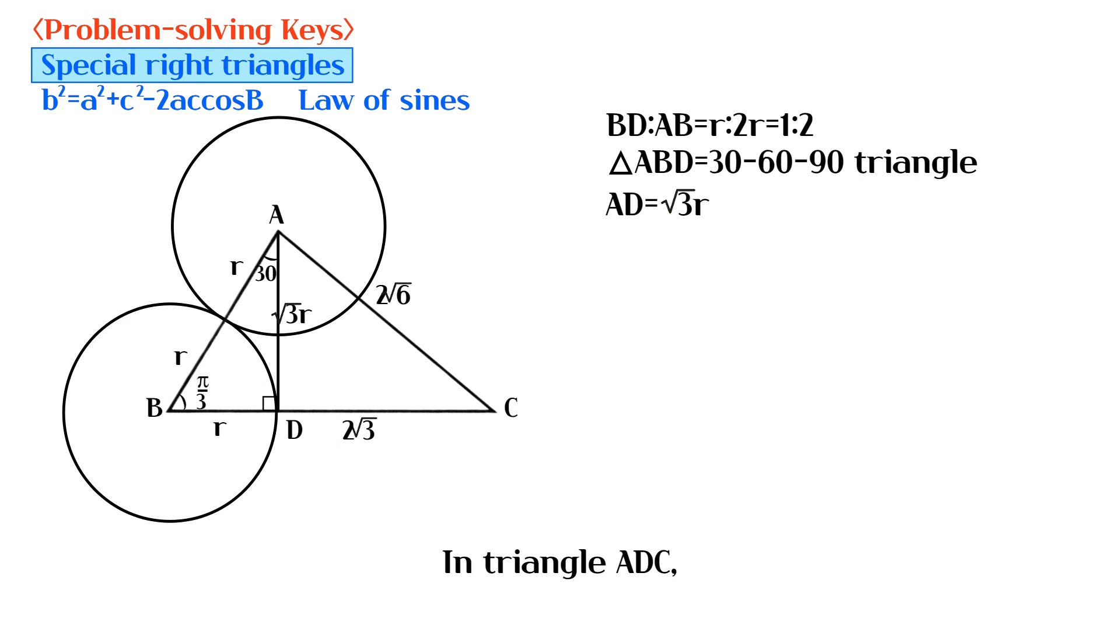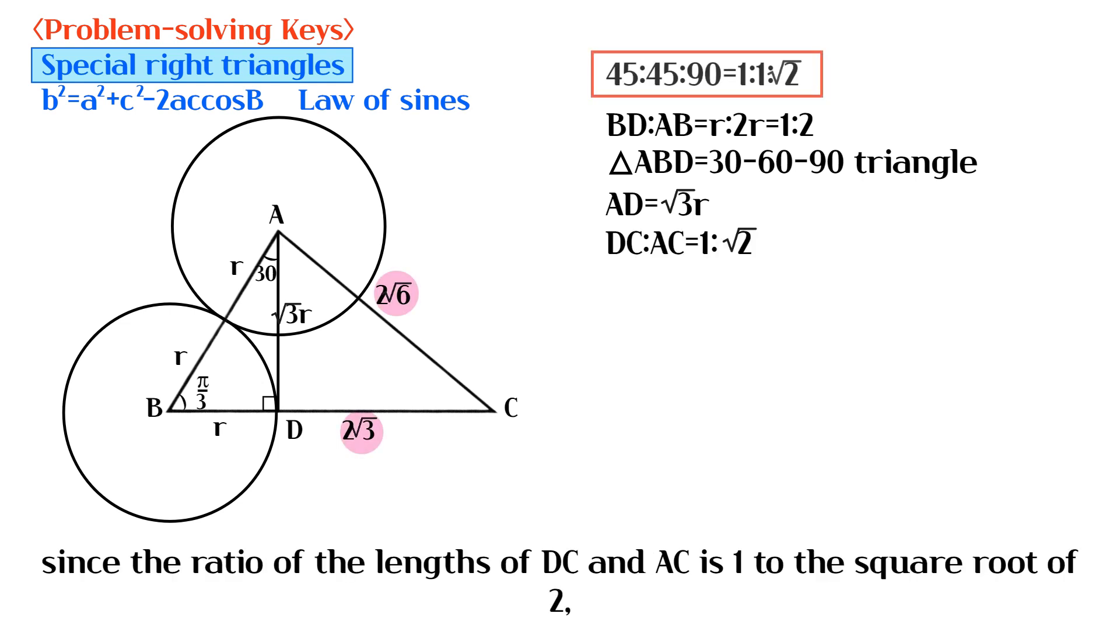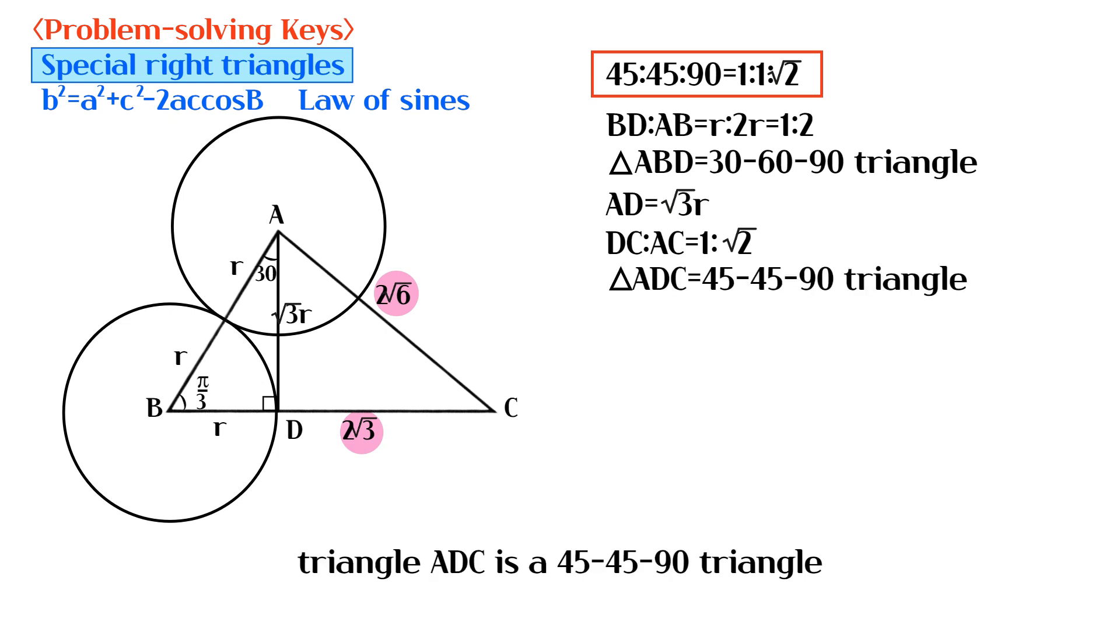In triangle ADC, since the ratio of the lengths of DC and AC is 1 to √2, triangle ADC is a 45-45-90 triangle. So the length of AD is equal to 2√3.